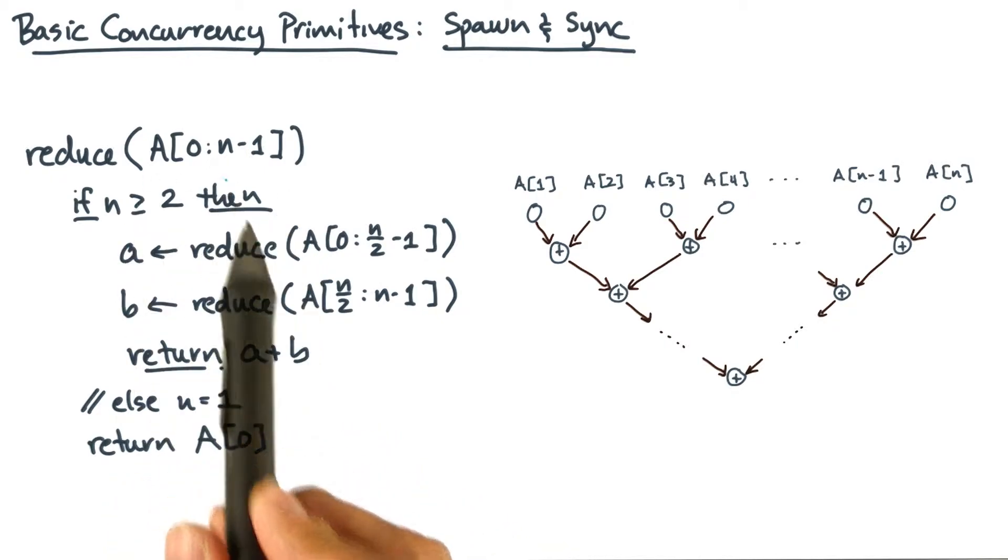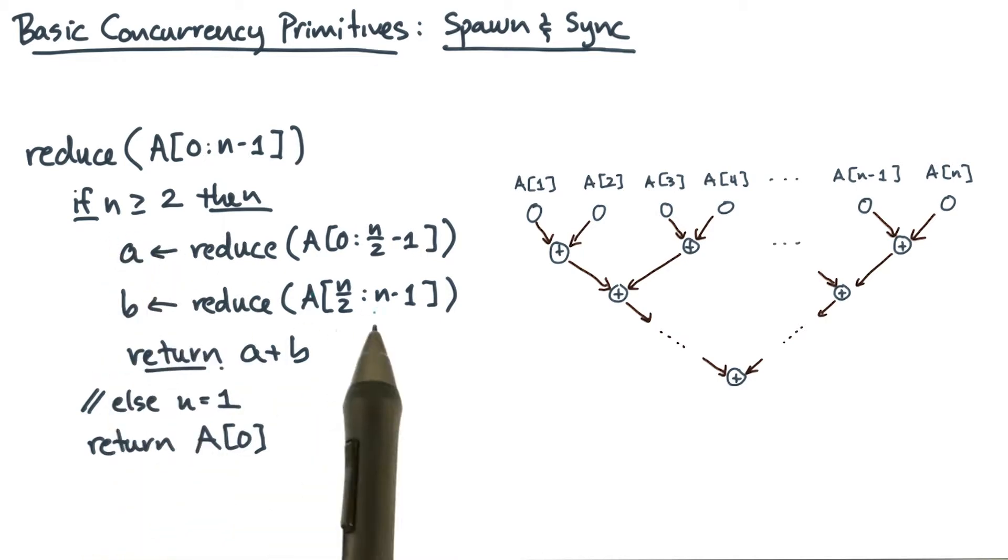So here's the pseudocode for such an algorithm. It takes an array A of length n, and if there are at least two elements, it does divide and conquer. So recursively calls itself on each half of the array and returns the sum. Otherwise, the array is just of size one, and it returns that element.